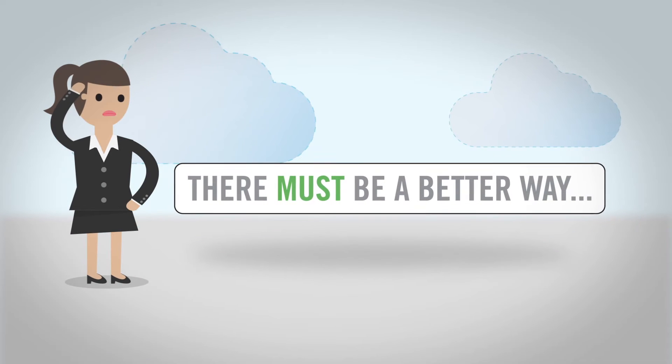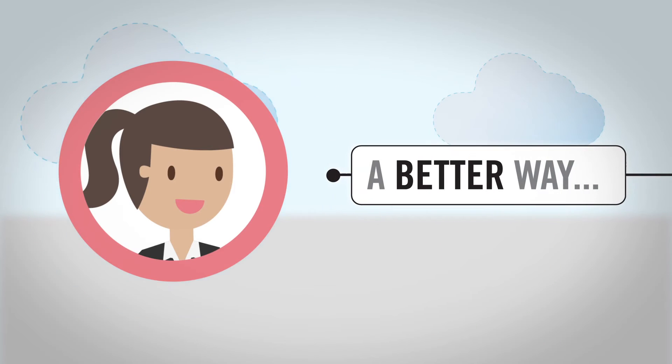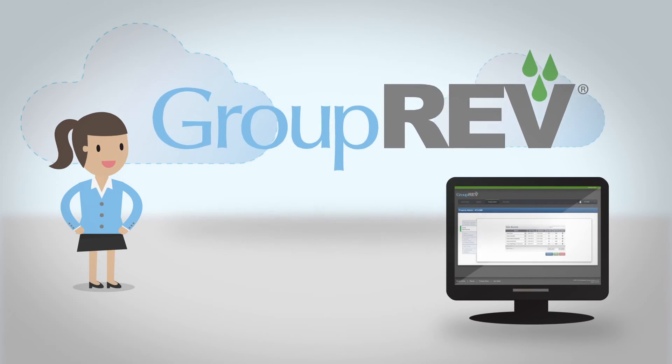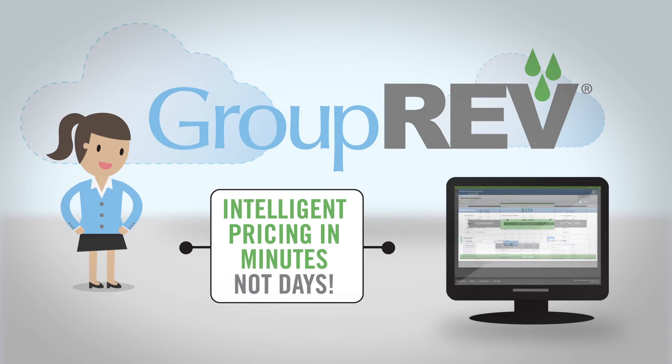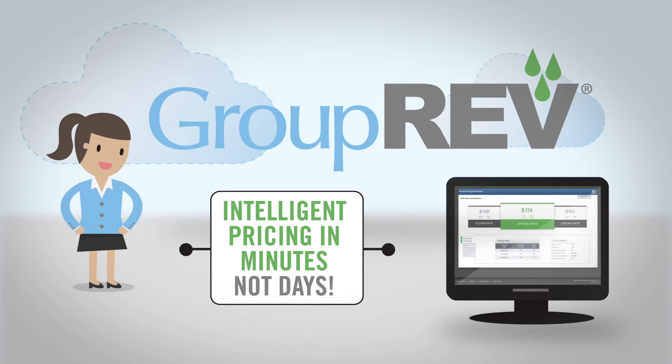There must be a better way. Lucky for Sally, and you, there is a better way. Meet GroupRev, the Rainmaker Group's pricing optimization software that can give you and your sales managers intelligent pricing in a matter of minutes, not days.